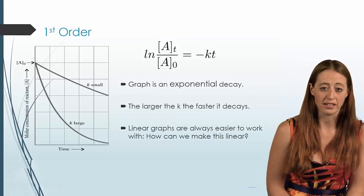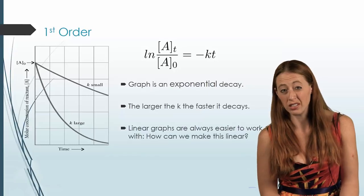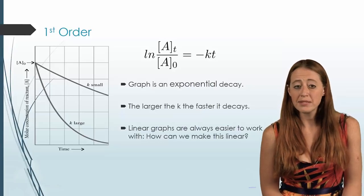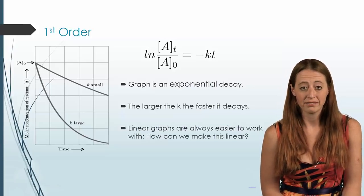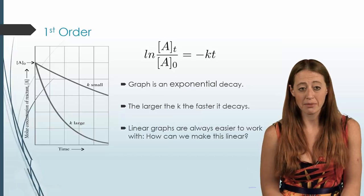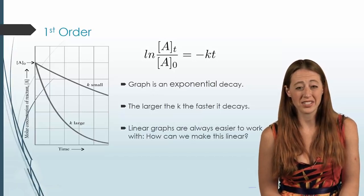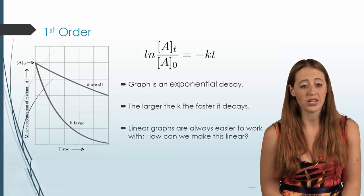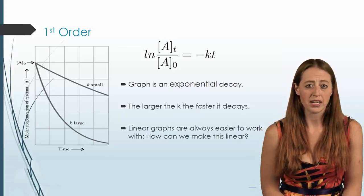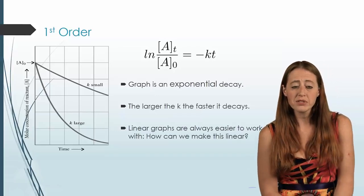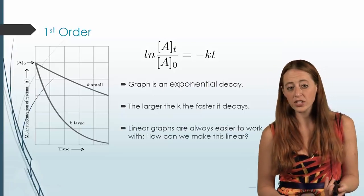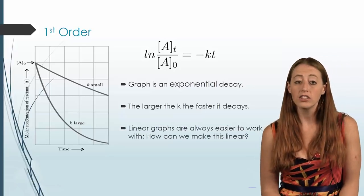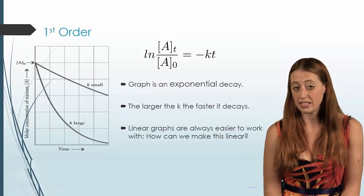You can see where this natural log comes in based on the integral of k times A. When we graph this, our graph is actually an exponential decay — as time goes on, our concentration decreases, which decreases our rate, so you don't just get a straight line anymore. The size of k is going to change what this graph looks like, and you could actually end up with something that looks very much like a straight line depending on the size of your k.